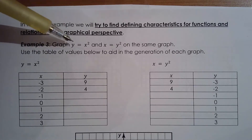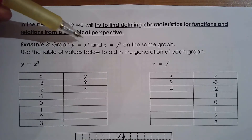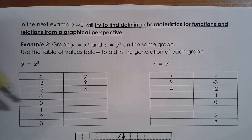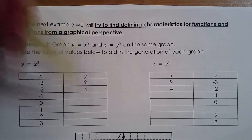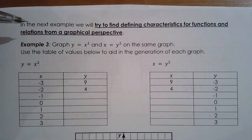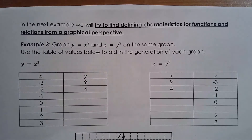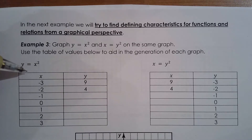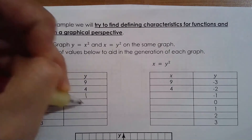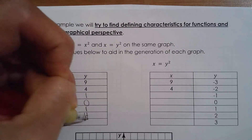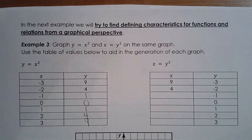We're going to try to graph them on the same grid and see if you can tell whether you have a function or not just by looking at the graph, because we're not always going to be given a table. Let's do the table of values for y equals x squared — hopefully you remember this from grade 10 as the basic parabola.